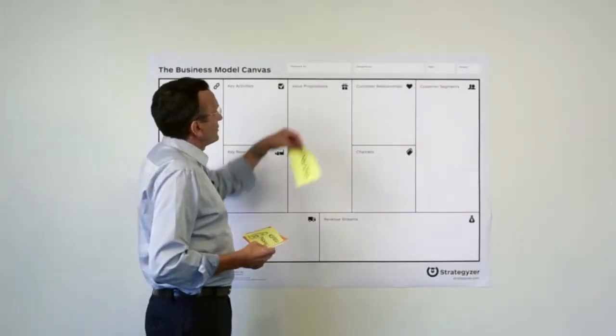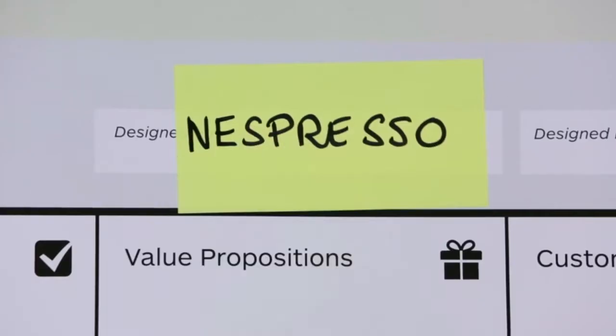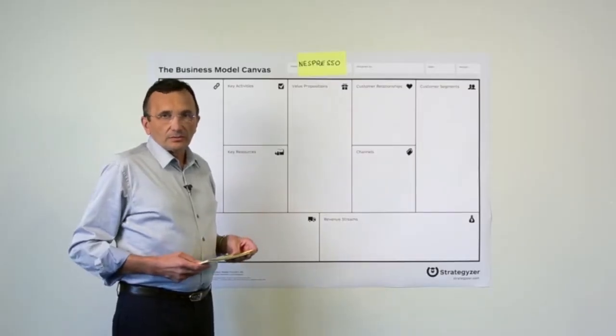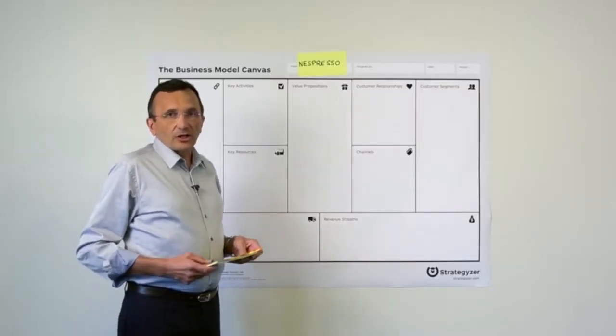Okay, as a first example, let's define the business model of Nespresso. What's the value proposition of Nespresso? It's to offer the best coffee at home, as good as the coffee in the best cafe in Roma. That's the idea.